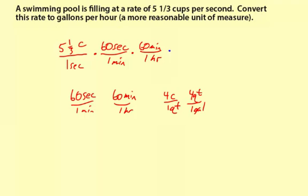I'm going to keep going — using a different color to help separate things out. Now we're going from cups to gallons. Looking back at the beginning, cups are in the numerator, so cups must be in the denominator for this next conversion. For four cups to one quart, the cups are in the numerator, so I'll use the reciprocal: one quart per four cups. That puts cups in the denominator, and they cancel out. For the next conversion, quarts are in the numerator, so I need quarts in the denominator: one gallon per four quarts.